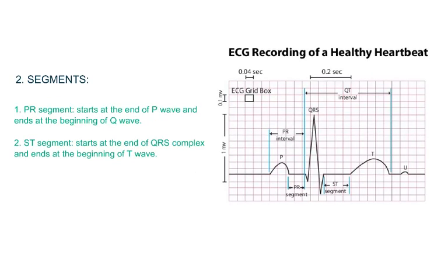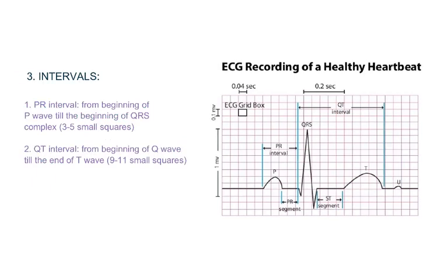The second component is segments. Segments are basically isoelectric lines or flat lines. They are called isoelectric because there is no electrical activity during this time. The two important segments are the PR segment and the ST segment. The PR segment starts at the end of the P wave till the beginning of the Q wave, and the ST segment starts at the end of the QRS complex till the beginning of T wave. The third component is intervals. There are two important intervals: PR interval and QT interval. The PR interval starts at the beginning of P wave and ends at the beginning of QRS complex. The QT interval starts at the beginning of QRS complex and ends till the end of T wave. Normal PR interval is 3 to 5 small squares and normal QT interval is between 9 to 11 small squares.